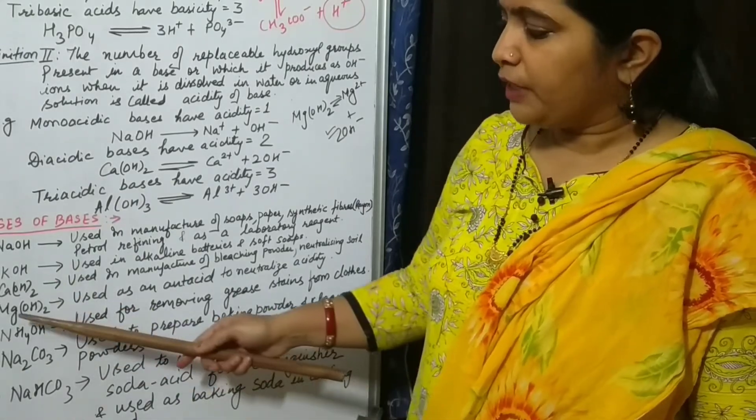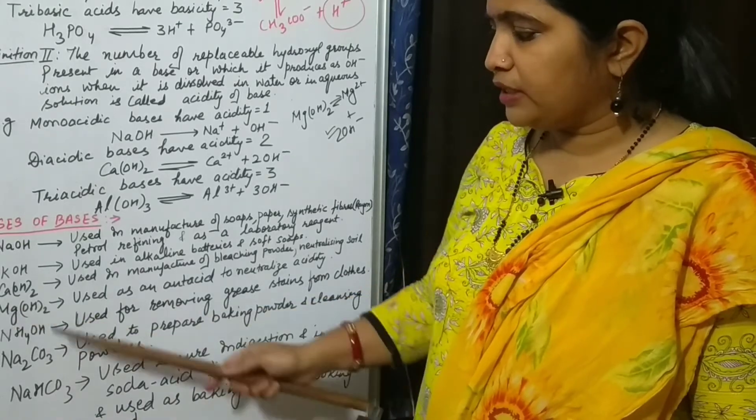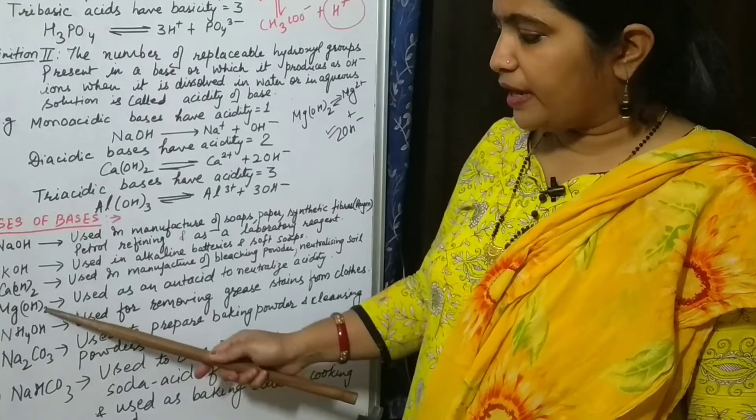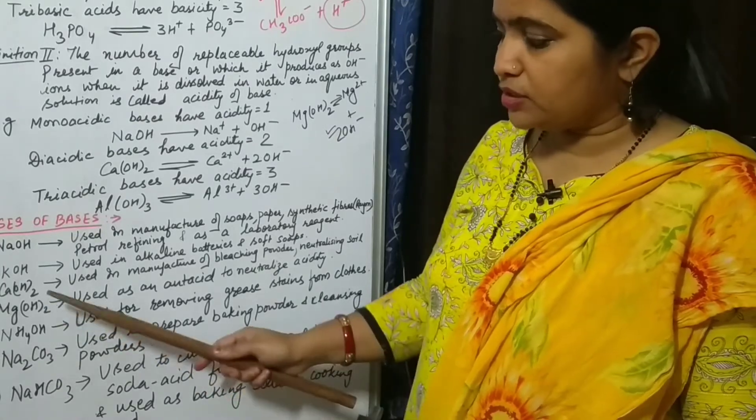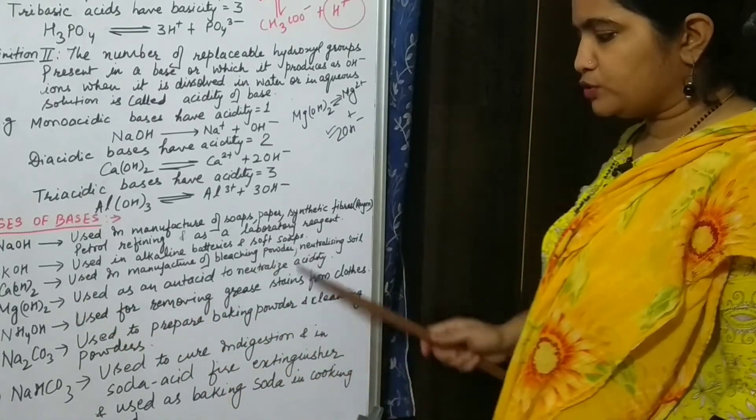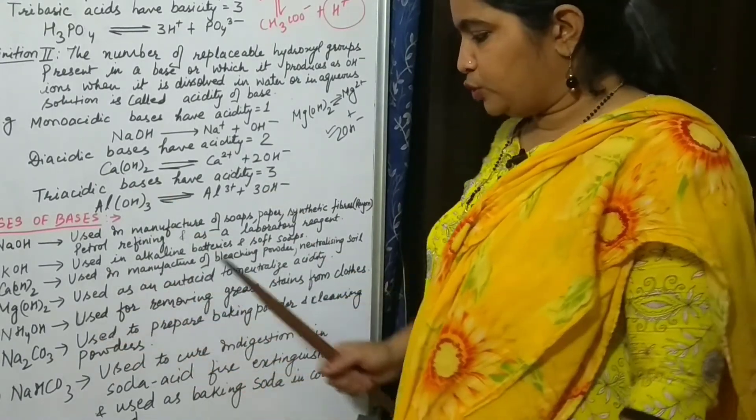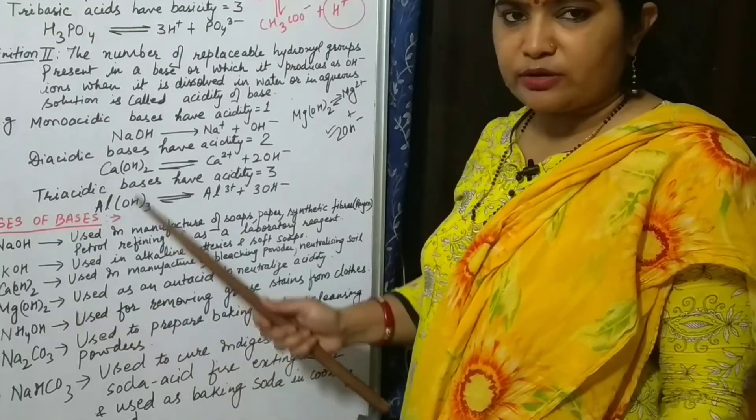Magnesium hydroxide - this is also known as antacid and milk of magnesia. This is used as antacid to neutralize the acidity. If indigestion happens to someone due to acidity, then magnesium hydroxide is given to that person.